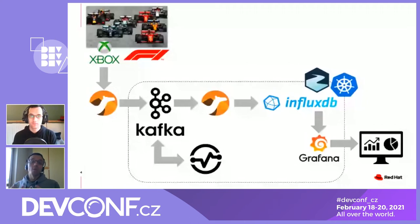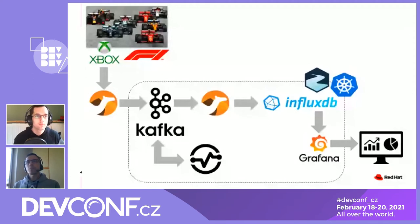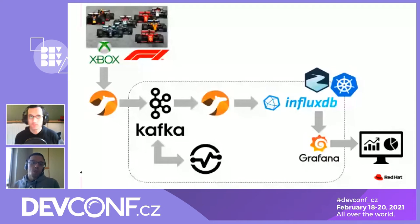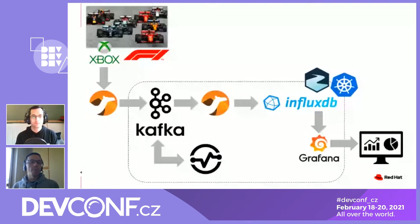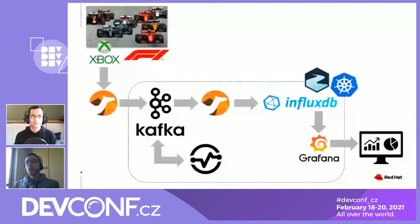The first problem to solve is where to ingest this telemetry data coming from the Xbox. One of the most well-known systems for ingesting data is Kafka — a messaging system for publish/subscribe that has become one of the most important data streaming platforms for event ingestion. We chose Kafka as the best ingestion system for this demo, but the challenge is how to go from UDP packets coming from the Xbox to Kafka. You could write an application listening on a UDP port and using a Kafka producer API, but that requires a lot of code.